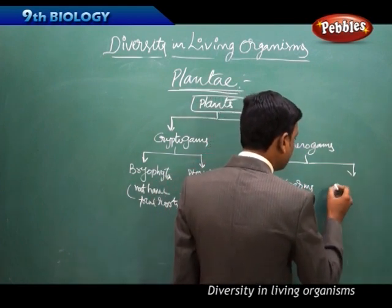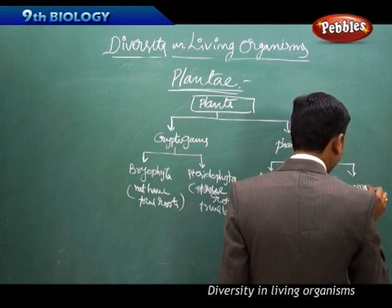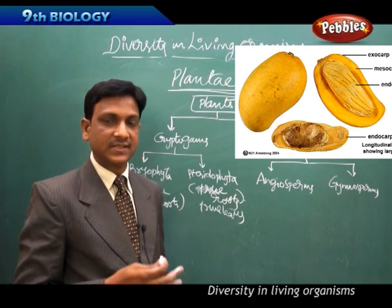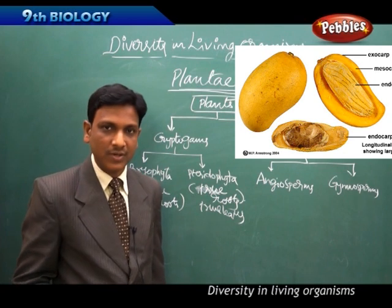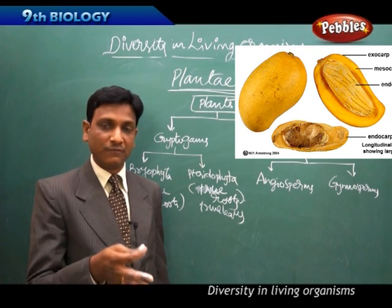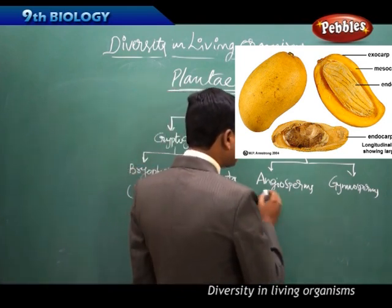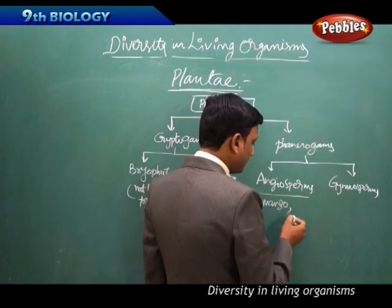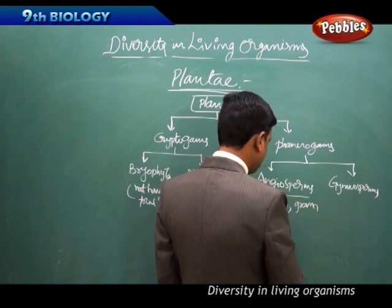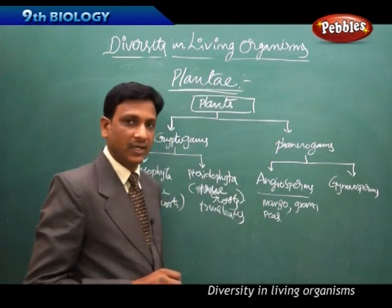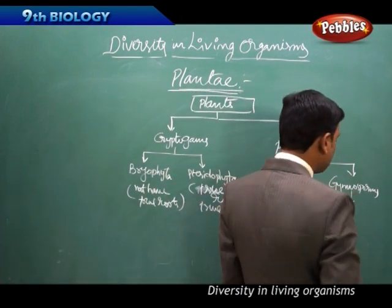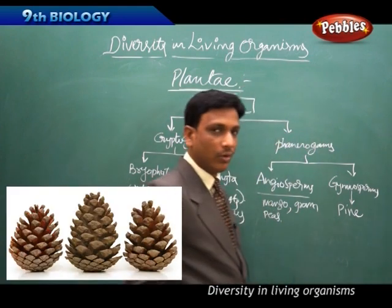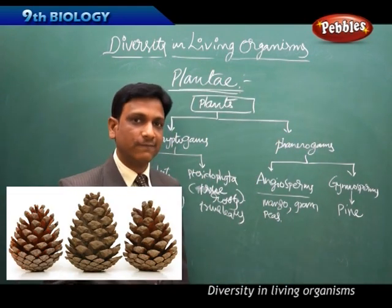Phanerogames are the plants that bear flowers and seeds. They are of two types: gymnosperms and angiosperms. Angiosperms are plants that have their seeds enclosed in a fruit — for example, mango, where you must cut the fruit to get the seed. Examples include mango and peas. In gymnosperms, the seeds are open and not enclosed by any fruit — for example, pine, where seeds are attached to a cone with no enclosing fruit.